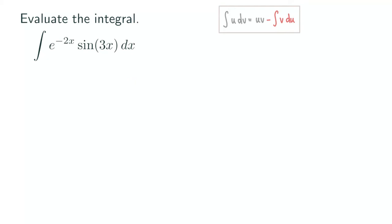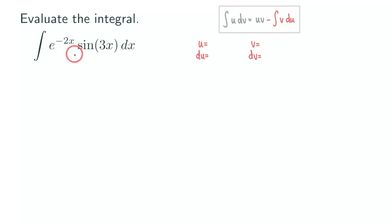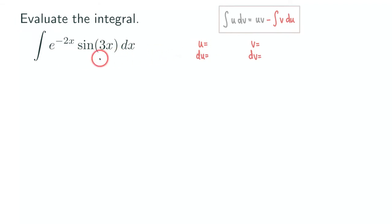Let me set up the table. Our table would be u equals something, du equals something, v equals something, and dv equals something. You may ask which ones do we choose for u — can we choose e to the negative 2x for u, or do we choose u to be sine 3x? It actually doesn't matter for this type of problem. When you see an exponential function and a trig function multiplied together, it's up to you whether you want to choose u or dv. It depends on the coefficient in the exponent and the argument of the trig function — those are both linear functions.